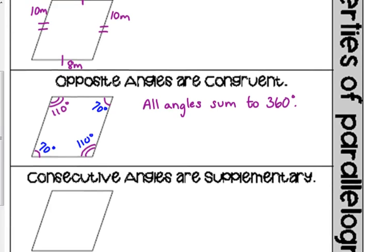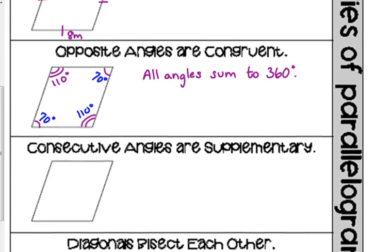Now, going off of that example, let's look at the next relationship there. Consecutive angles are supplementary. Now, if something's consecutive, that means it goes in order. So it doesn't matter where we start. The next angle, as we rotate around the figure, those two angles are supplementary.